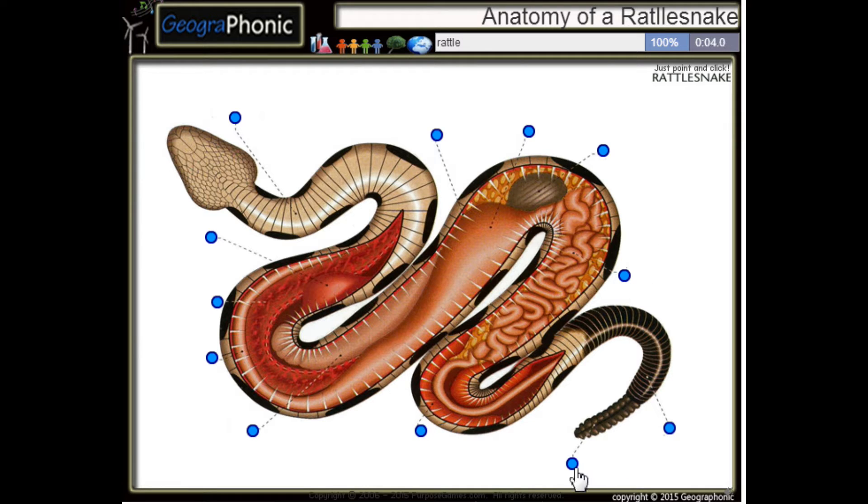This is the rattle of the snake. Here we see a belly scale. This is of course its tail.